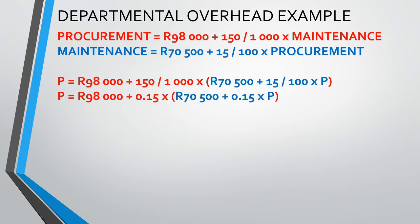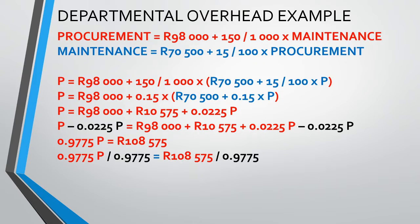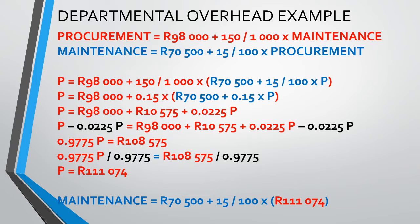First, I simplify the fractions. I can then multiply out the brackets. I then subtract 0.0225P on each side — remember, what is done to one side must be done to the other as well to keep the equation balanced. We can then simplify by doing the addition and subtraction. Now to get P by itself, we need to divide both sides by 0.9775. And we arrive at the procurement department being equal to R111,074. To calculate the value of maintenance, we simply substitute the value of the procurement department, which we now know is R111,074, into the maintenance equation. We can then solve this equation and arrive at the value of the maintenance department of R87,161.